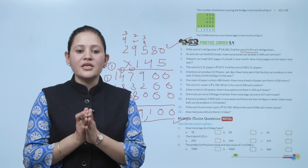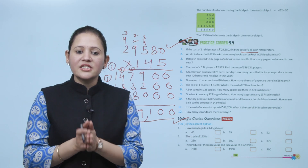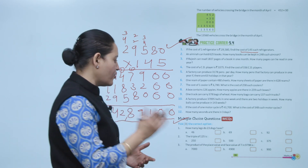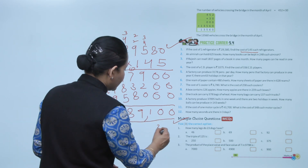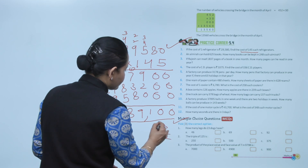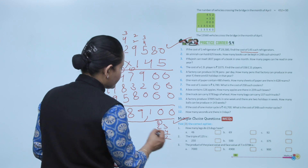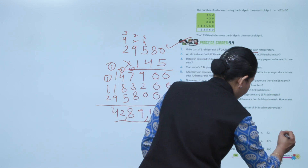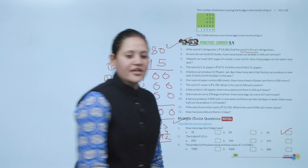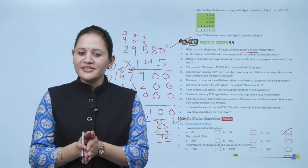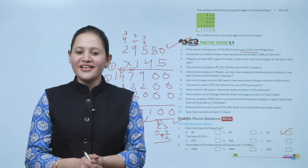Next are multiple choice questions. For example: how many legs do 23 dogs have? One dog has 4 legs, so 23 into 4 equals 92 legs. Here we end the chapter — I hope you understood it well. Now you have to practice it.